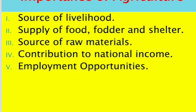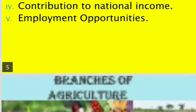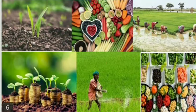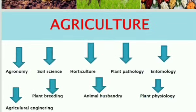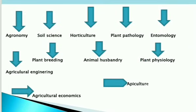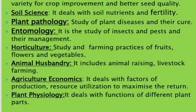Now let's look at the branches of agriculture. There are numerous branches of agriculture. Some of the illustrated branches are: agronomy, soil science, horticulture, plant pathology, entomology, agricultural engineering, plant breeding, animal husbandry, plant physiology, apiculture, and agricultural economics.